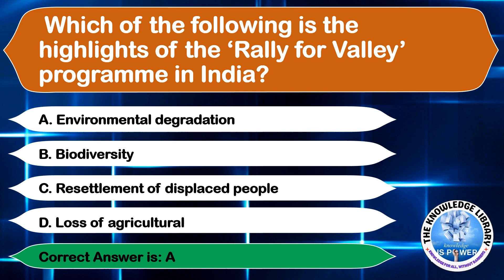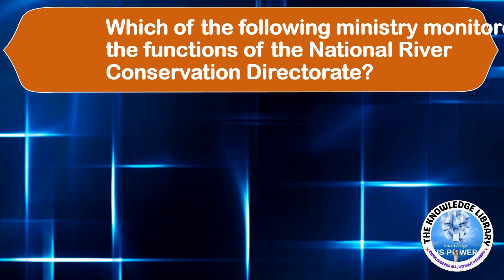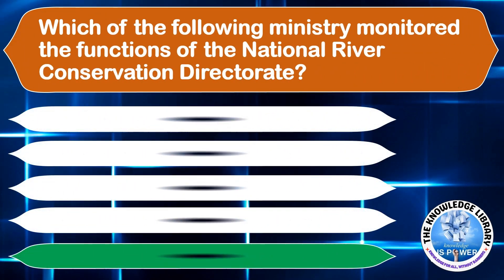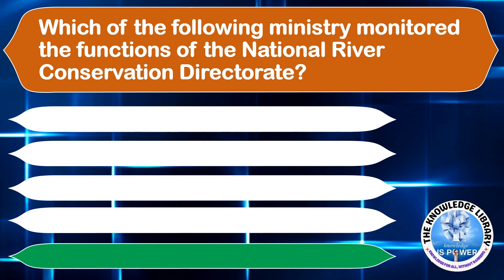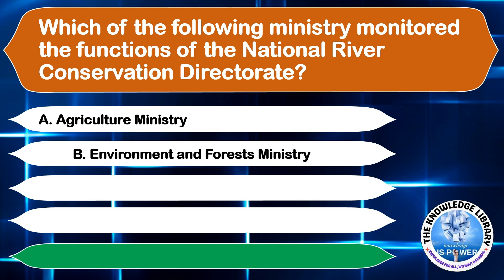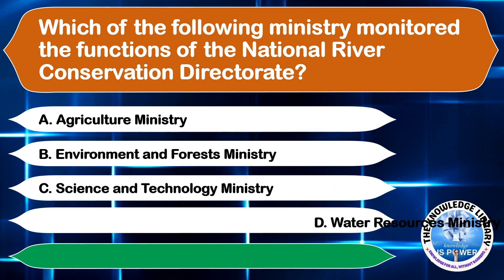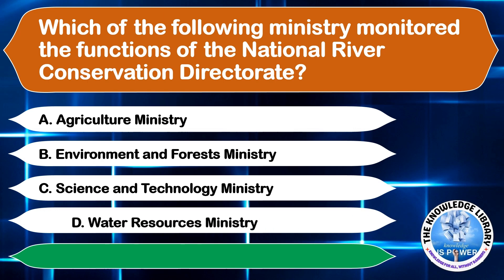Which of the following ministries monitors the functions of the National River Conservation Directorate? A. Agriculture Ministry, B. Environment and Forest Ministry, C. Science and Technology Ministry, or D. Water Resources Ministry. The correct answer is option B, Environment and Forest Ministry.